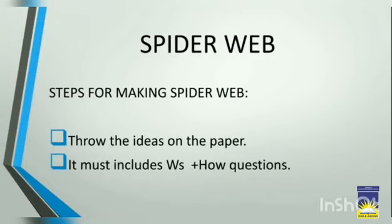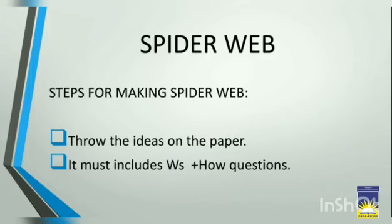As you all have seen a spiderweb and you know what it looks like. So now the question arises: how can we use the spiderweb in our subject? Spiderweb is basically a helping tool for us for composition, and it has steps for making. The first step is to throw the ideas onto the paper. When you have a topic to write a composition, first of all, you need to put all the ideas about the topic which you have in your mind onto the paper.